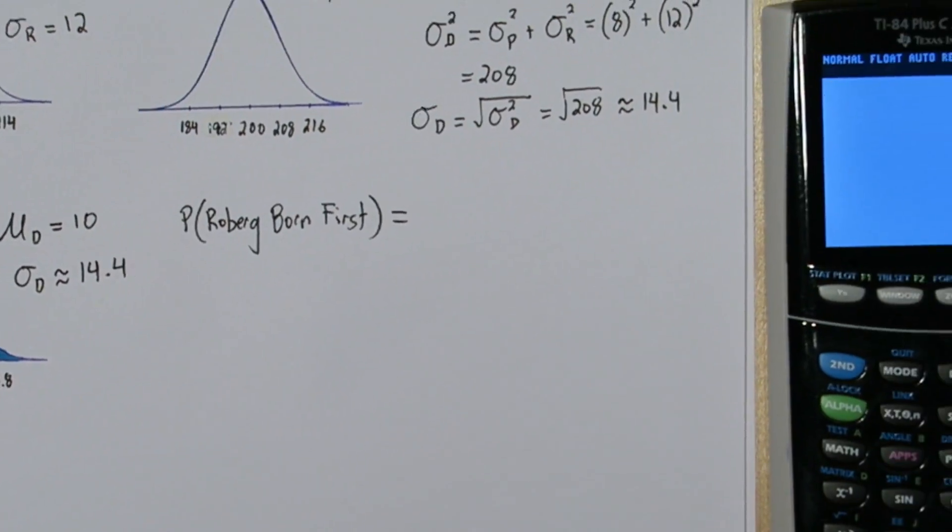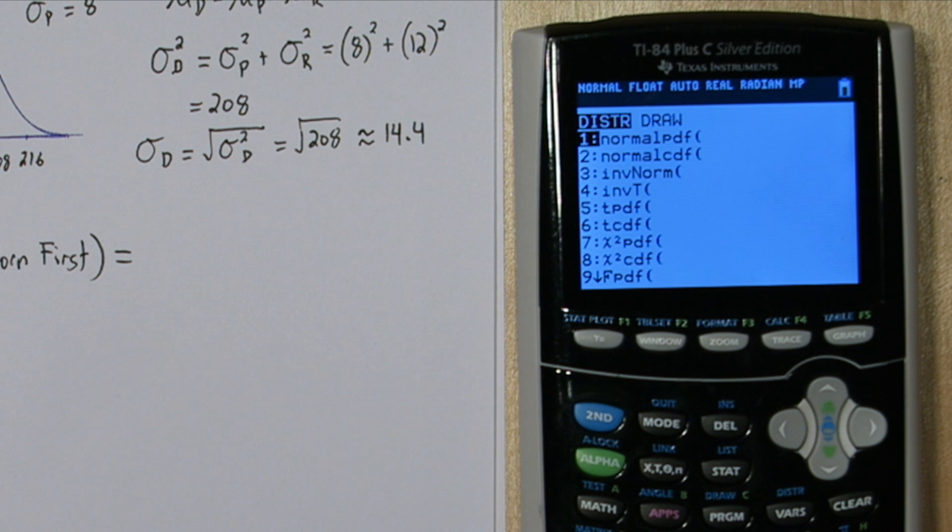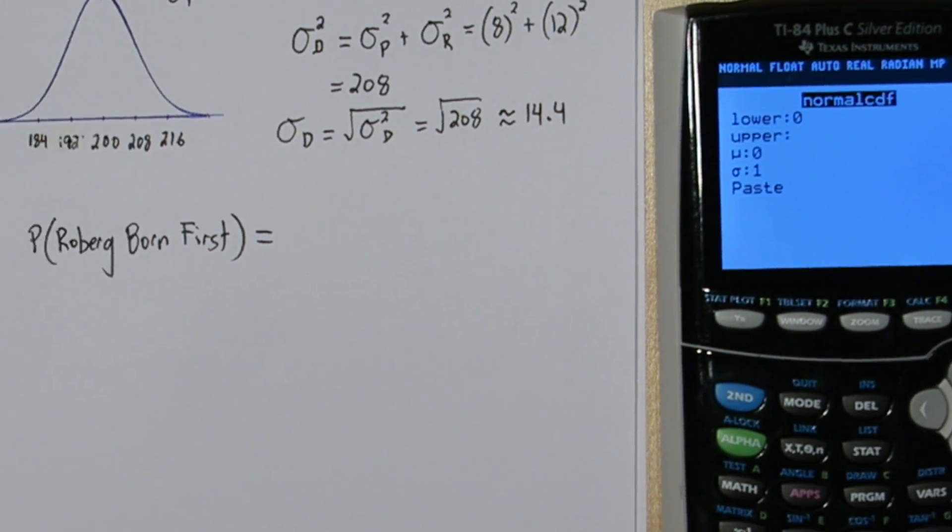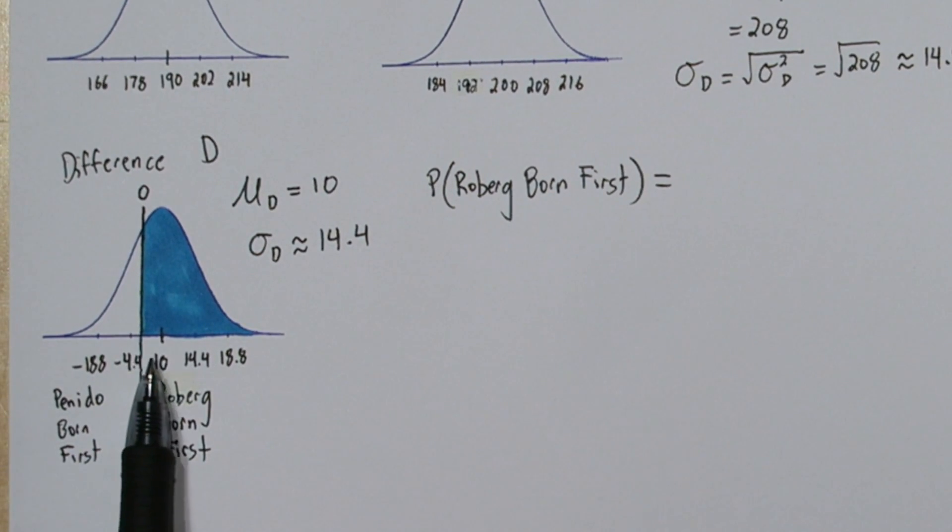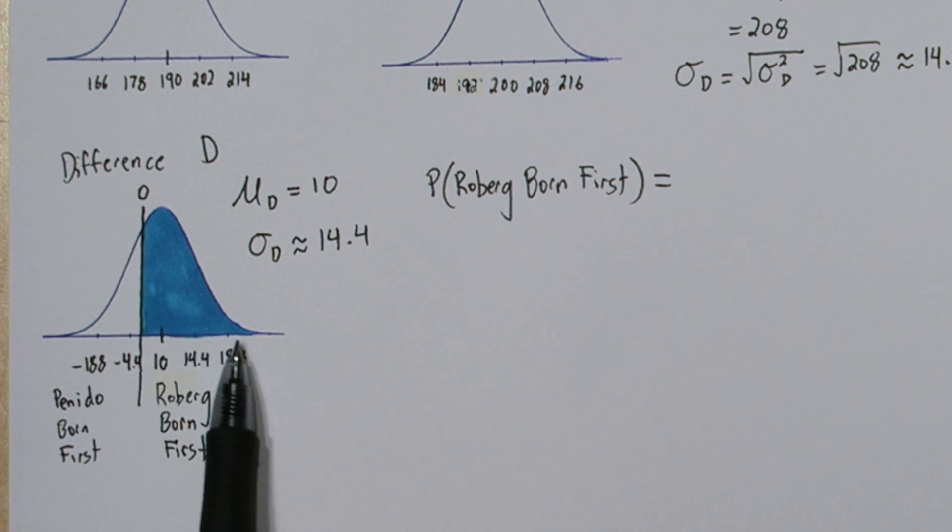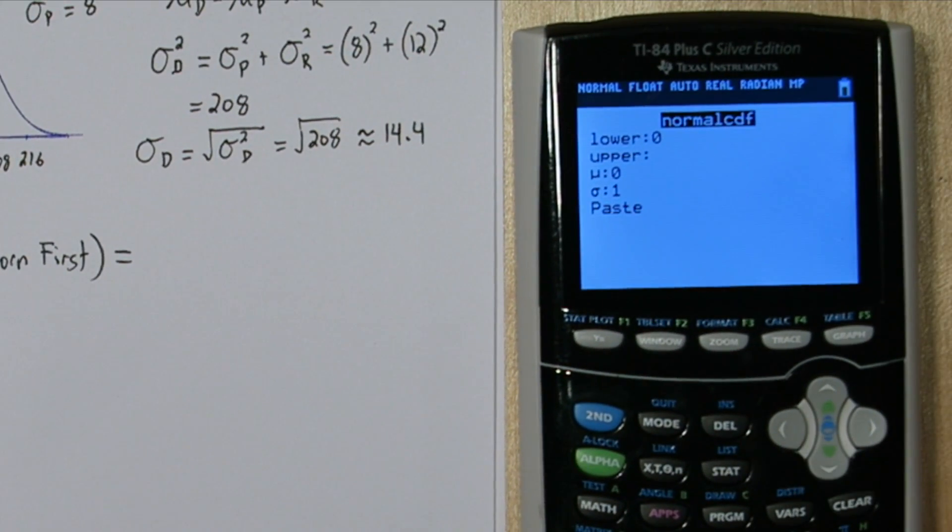So we can find this area on the calculator. If you press 2nd and then VARS, you get to the distribution menu. Go to norm CDF. Now our lower limit is going to be 0. That corresponds to our cutoff right here. And we actually don't have an upper limit. As long as the Roeberg baby is born first, it doesn't really matter how late the Paneto baby is. So we'll put 99999.